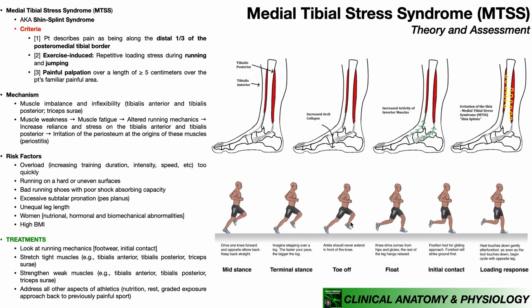In treating medial tibial stress syndrome, you need to look at the person's running mechanics, including footwear, and look at initial contact — you may need to suggest they change their running style to land with at least the midfoot, preferably the forefoot, for better shock absorption. Then there are more obvious interventions like stretching tight muscles — the tibialis anterior, tibialis posterior, and triceps surae are very commonly tight — and strengthening weak muscles, which could be those same muscles among others up in the thigh.